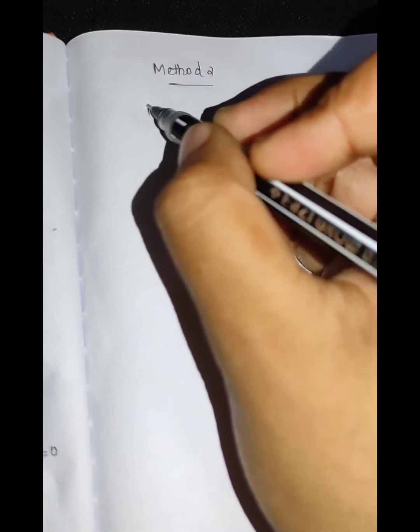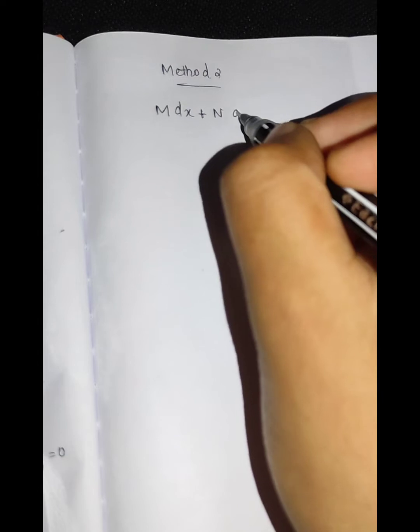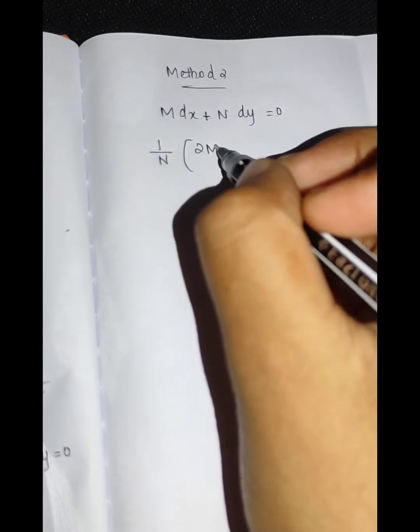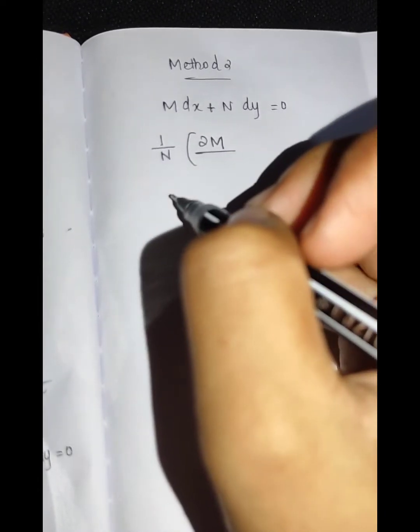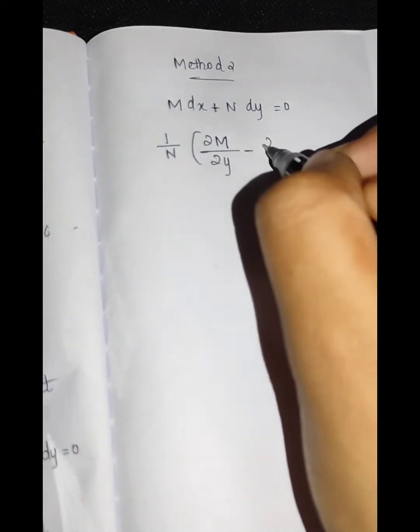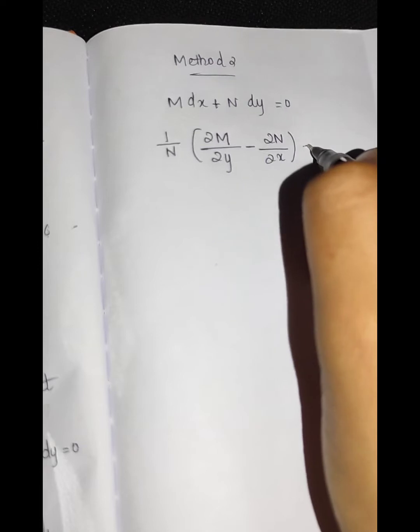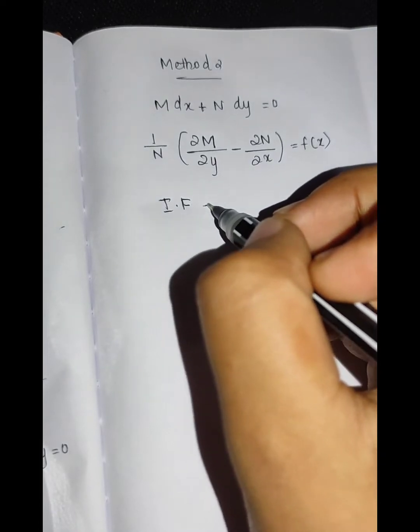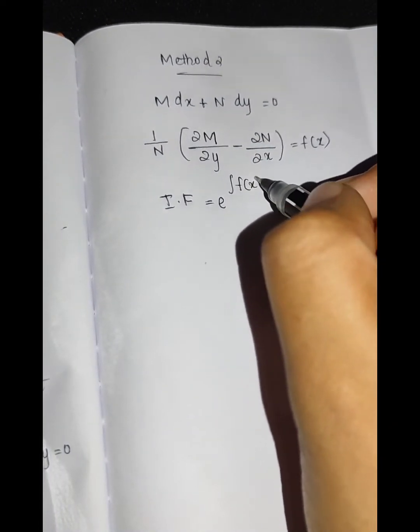In the first method, we will try to solve the problem using the differential equation M dx plus N dy in this formula. We use 1/N times the partial differentiation: ∂M/∂y minus ∂N/∂x equals f of x.